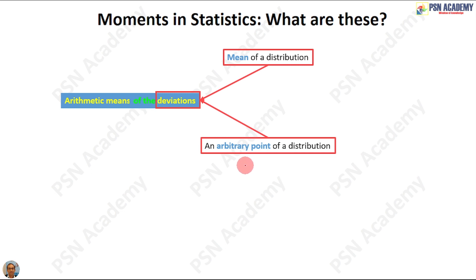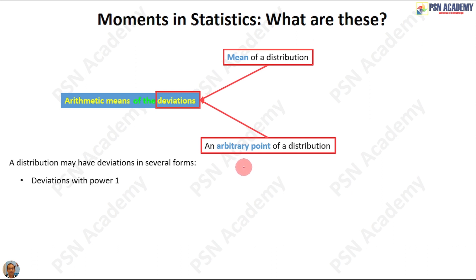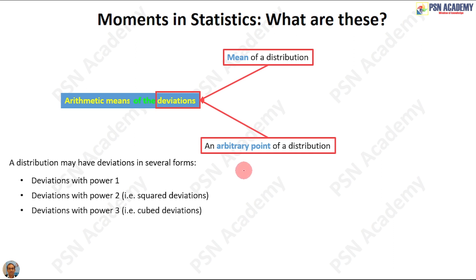The next question is: in how many forms can the deviations be had? The deviations may have power 1 — that is, simply subtracting the data point from the mean or from some arbitrary point. The deviations may come with power 2, which we generally call squared deviations; with power 3, cubed deviations; or power 4. There are deviations with more than power 4, but we are dealing with deviations up to power 4 because that will solve our purpose.